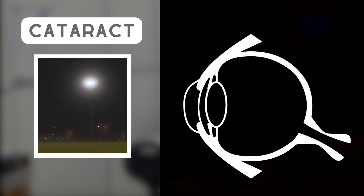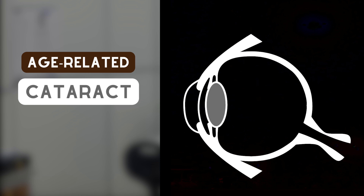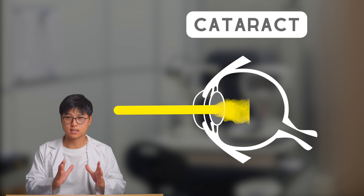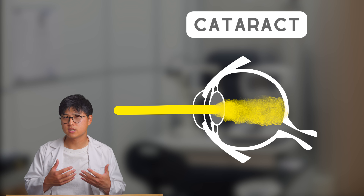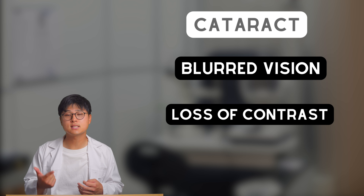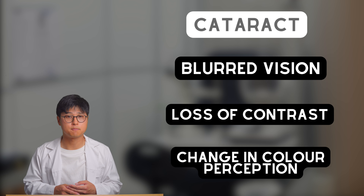For those that may not know, a cataract is a term that is used when the crystalline lens inside your eye begins to turn milky and opaque. There are many reasons for why this can occur, but the most common form is what is known as the age-related cataract. Because a cataract interferes with the optics of the eye, it can lead to a series of symptoms, such as blurred vision, loss of contrast, and a change in colour perception.